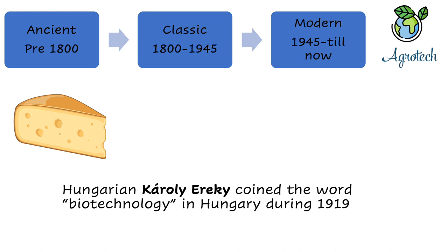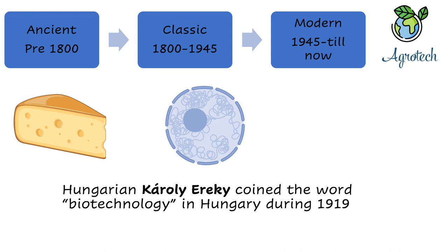If we study the developments of the ancient era, we can say these inventions and discoveries were based on close observation of nature. Moving to the classic phase of biotechnology, Hungarian scientist Károly Ereky coined the term 'biotechnology' in 1919. This classical phase was more advanced than the ancient phase and was more focused on cellular components, where Robert Brown discovered the nucleus and cell. At this time the field of biology also first appeared.